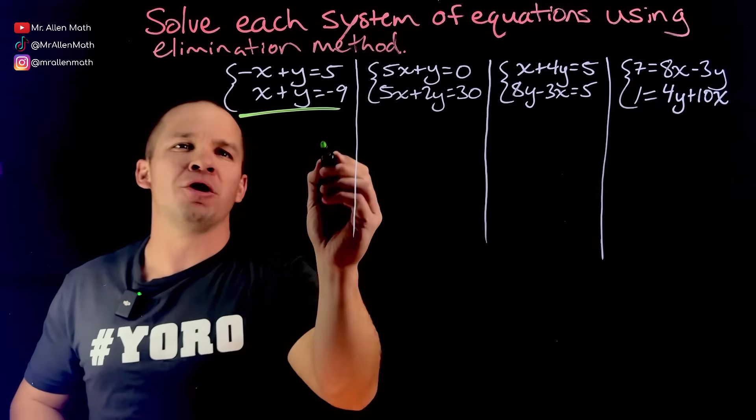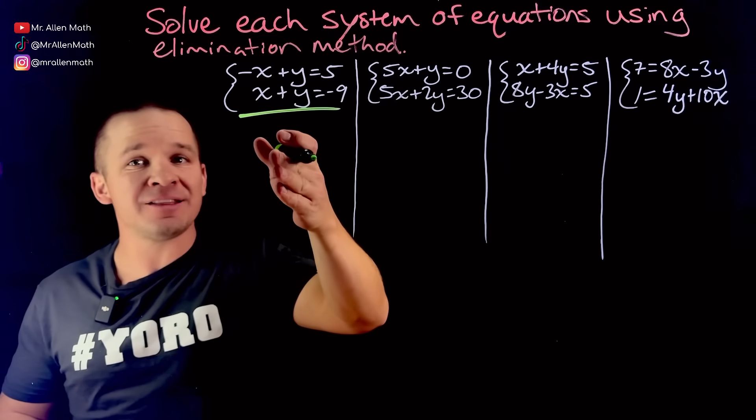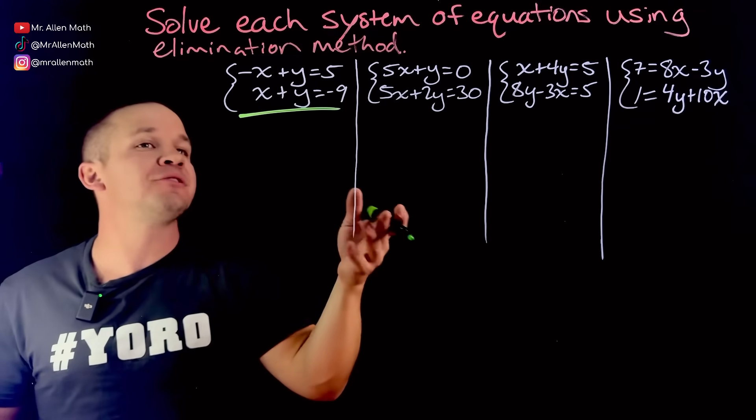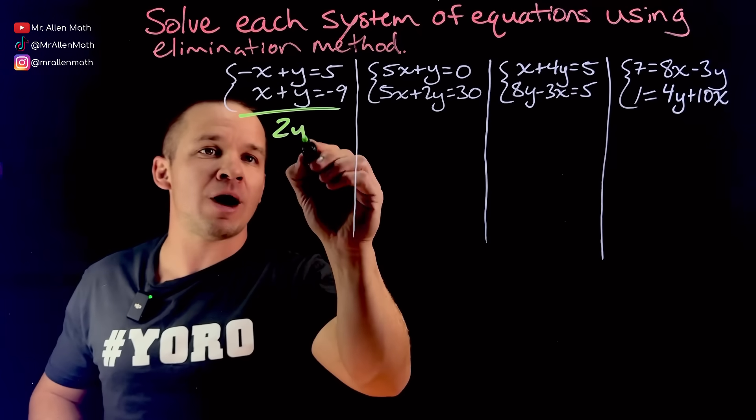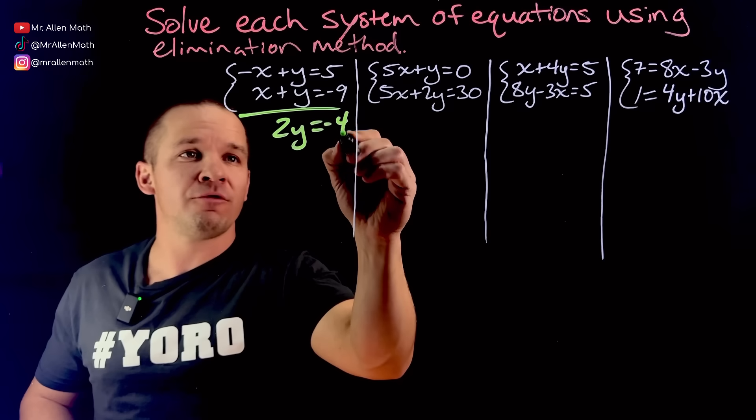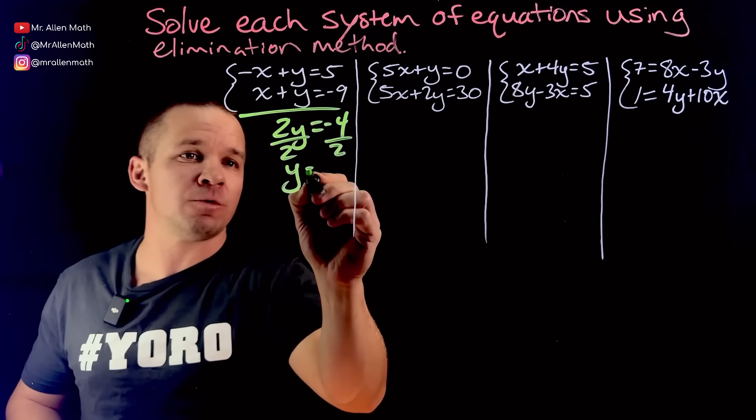First one here, boom. It's set up perfectly for elimination method because when I add these two equations together, my x's cancel, eliminate, hence the name. I get 2y equals, and here I'm gonna have five, negative nine, that's negative four. We're gonna divide by two on both sides and we get y equals negative two.